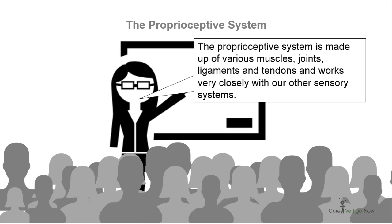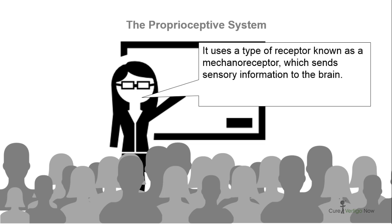The proprioceptive system is made up of various muscles, joints, ligaments and tendons and works very closely with our other sensory systems. It uses a receptor known as a mechanoreceptor, which is a type of cell, to be more specific, a protein, which sends sensory information towards the brain for it to be processed.